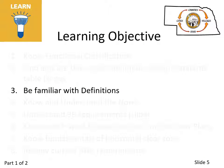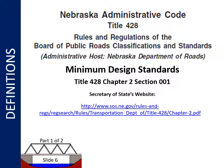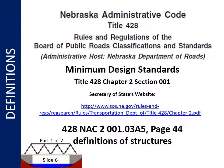It is good to be familiar with terminology used in the standards and throughout this presentation. It may be helpful to have a copy of the minimum design standards in front of you. What is meant by length of a structure will be explained, and definitions for bridge and non-buried structure are also provided. Nebraska's minimum design standards on page 44 provides definitions of bridge, non-buried structure, culvert, low water stream crossing, and ford. Stopping the video and reviewing these definitions will be helpful.